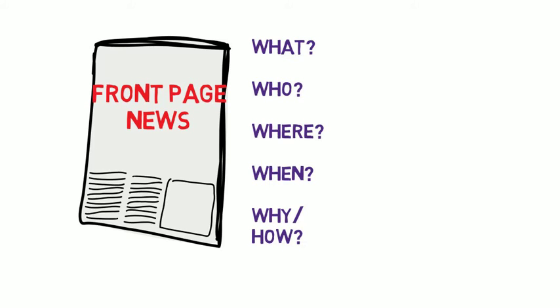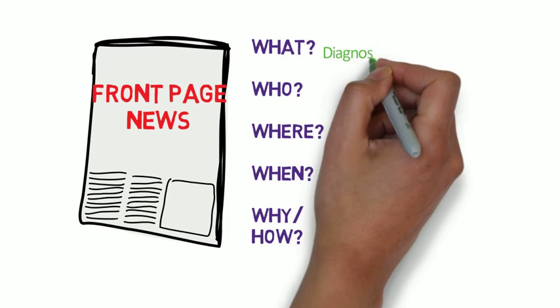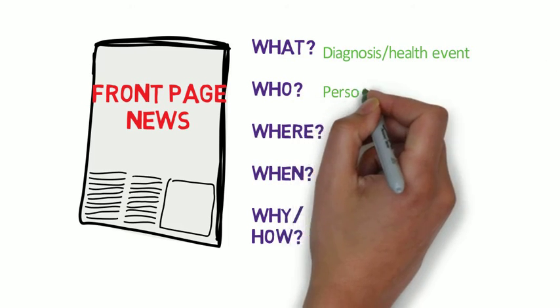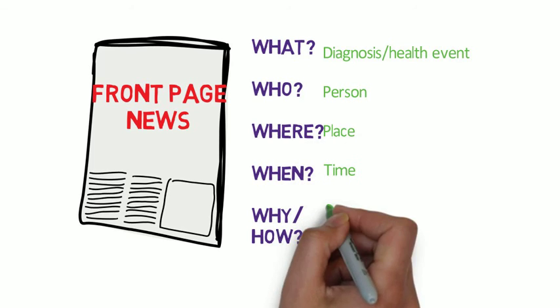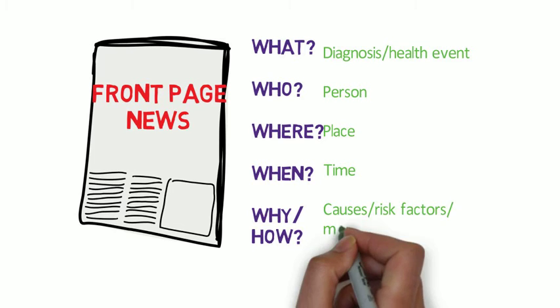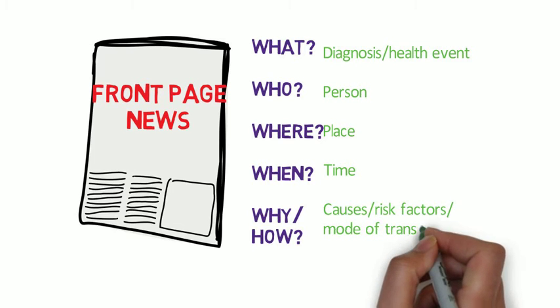The difference is that the epidemiologist tends to use synonyms for the five W's: diagnosis or health event (the what), person (the who), place (the where), time (the when), and causes, risk factors, and modes of transmission (the why and the how).